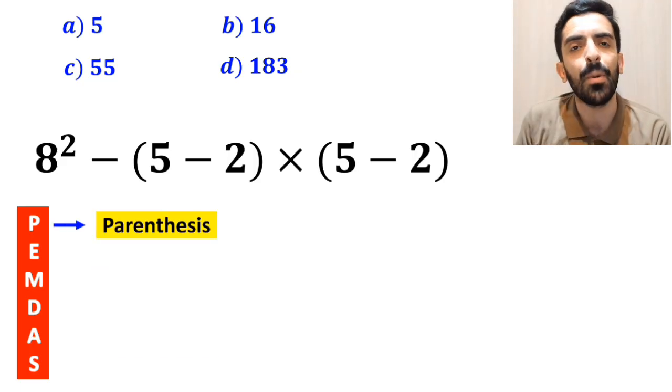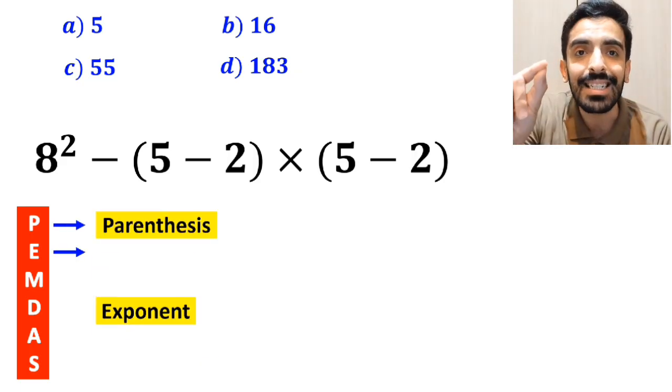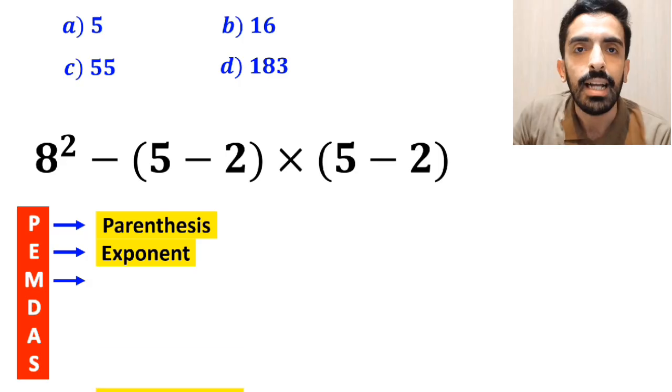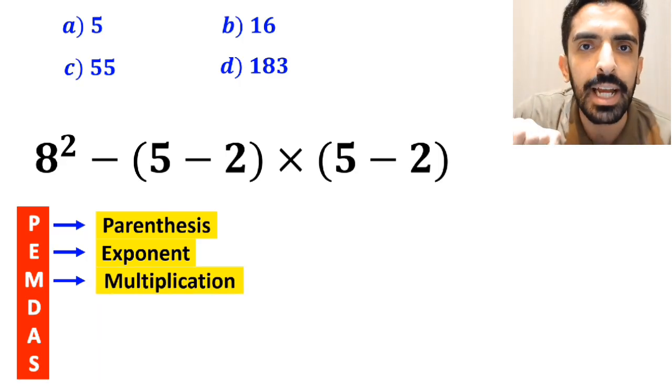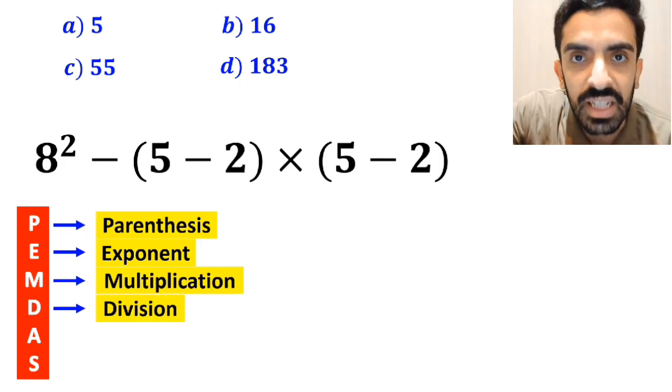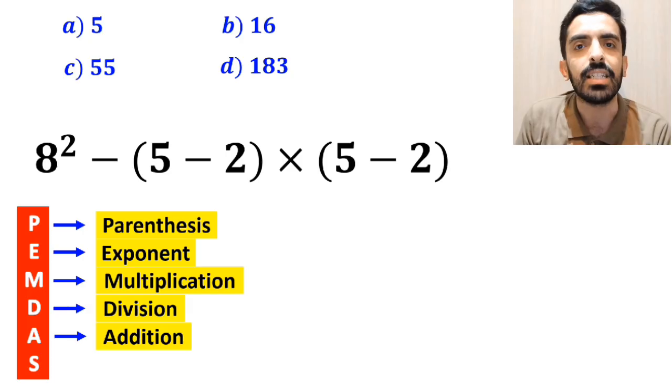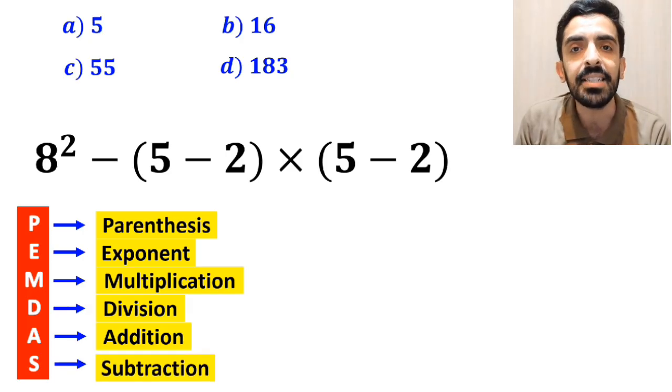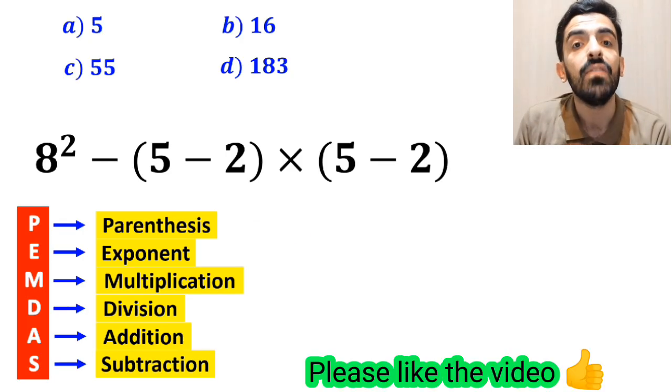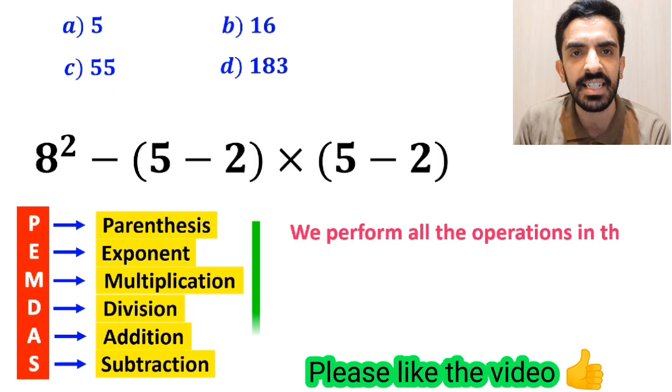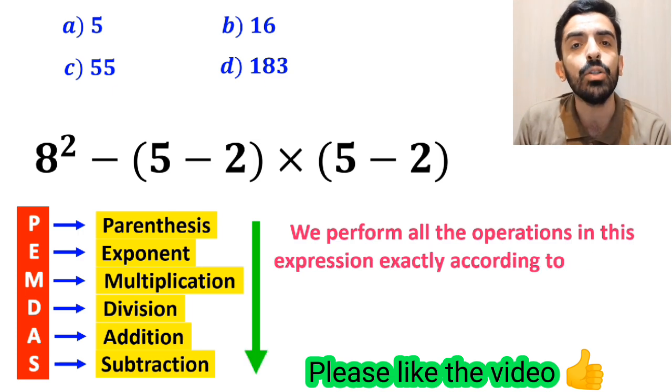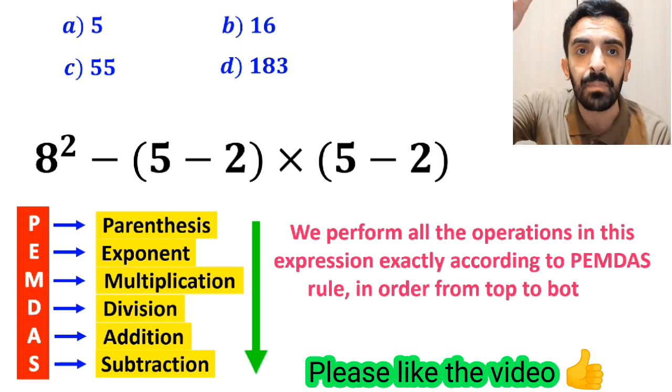In this rule, P stands for parenthesis, E stands for exponent, M stands for multiplication, D stands for division, A stands for addition, and S stands for subtraction. We must perform all the operations in this expression exactly according to the PEMDAS rule in order from top to bottom.